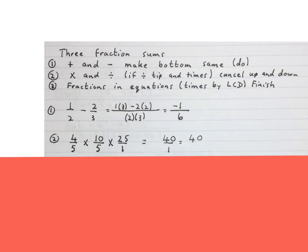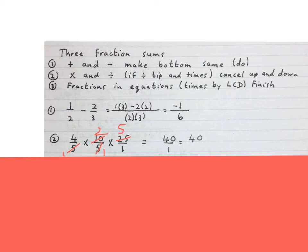The second type was the times and divide type — if there was a divide you would tip it and times, then cancel up and down. For example: 5 goes in here once, 5 goes in there twice, 5 goes in here once, 5 goes in there 5 times. You times the top together and get 40, times the bottom and get 1 — final answer 40. Not the purpose of this video.